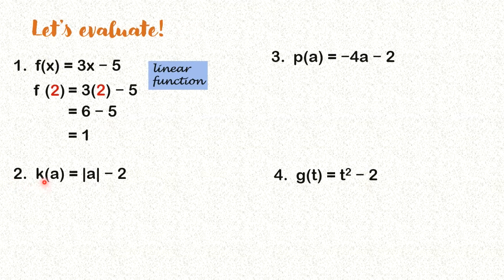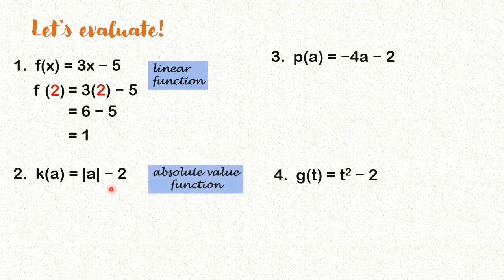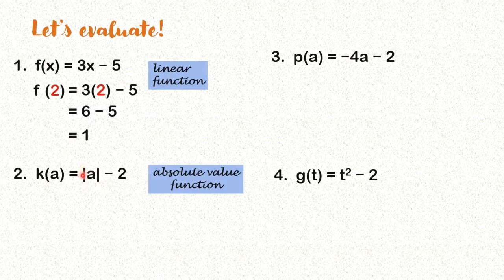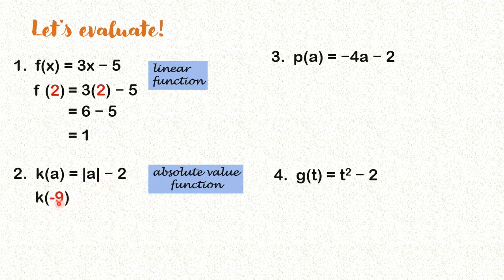Let's try number 2. What kind of function is K of A? K of A is an absolute value function. Kasi ito yung nagsisignify ng absolute value — itong vertical bars. So our K of A is equal to the absolute value of A minus 2. Now we get K of negative 9. So how do we do that? We substitute. We replace A here by negative 9.